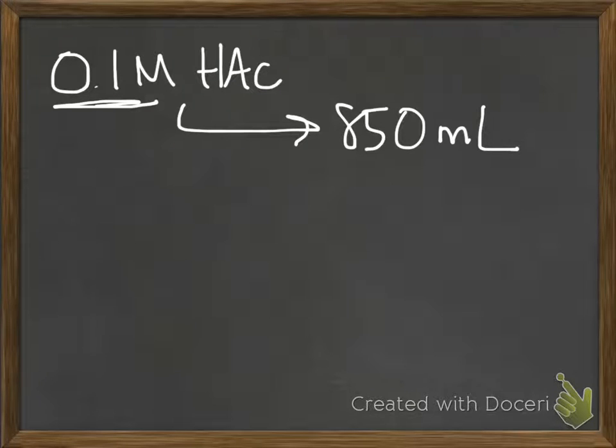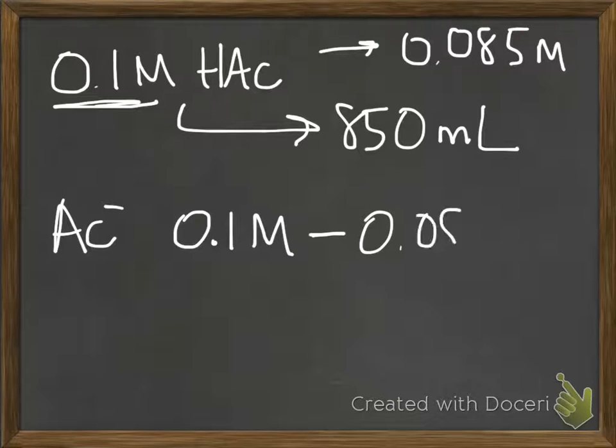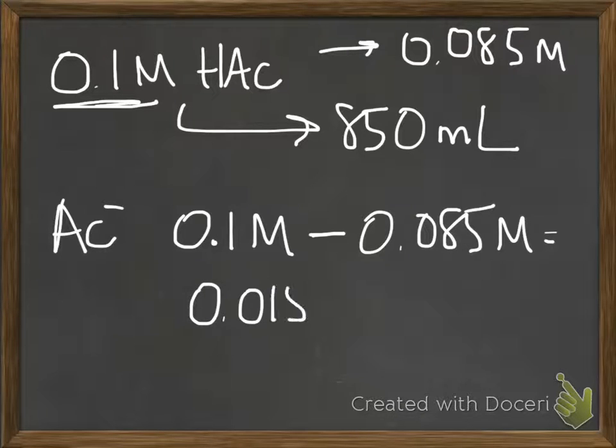So the amount of acetate that you need to put in is 0.1 molar, which is the total that you want to end up with, minus the moles of acetate, and that's 0.015 molar.